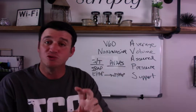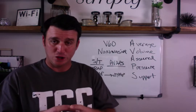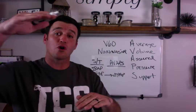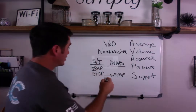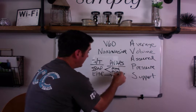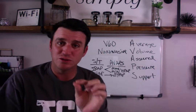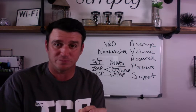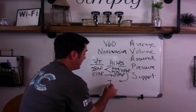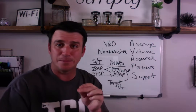When it comes to setting an IPAP in AVAPS, you don't set a single IPAP. Instead, you tell the machine to work between a minimum IPAP and a maximum IPAP. You set two IPAPs — a max and a minimum — and then you set something you never set in ST mode or traditional BiPAP: a target tidal volume.